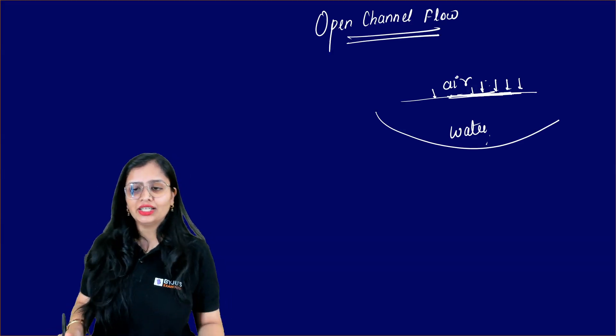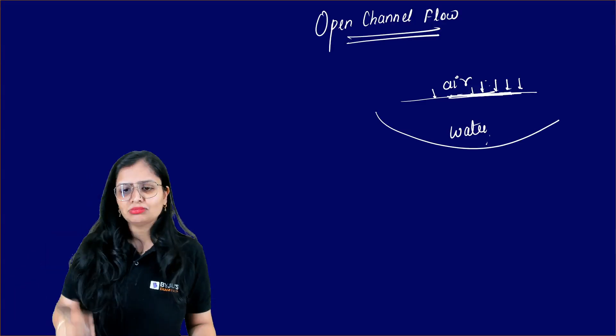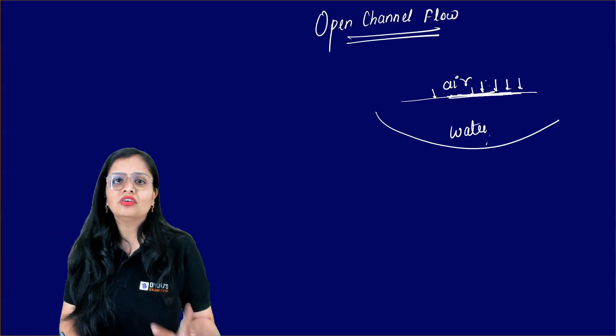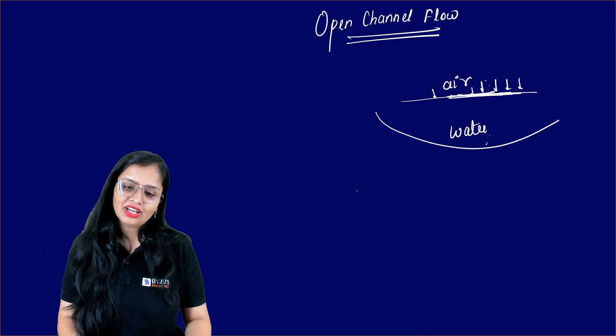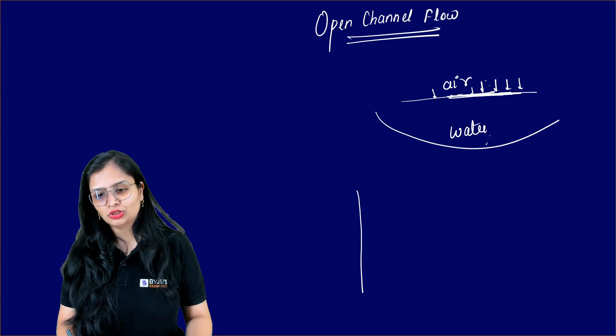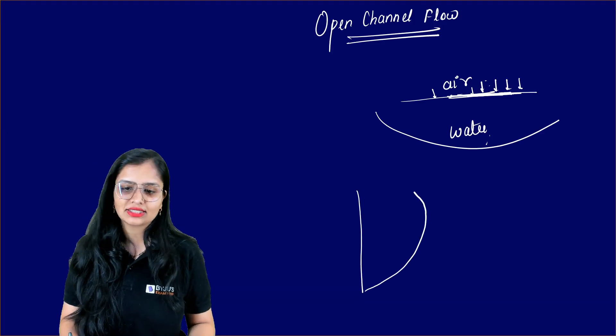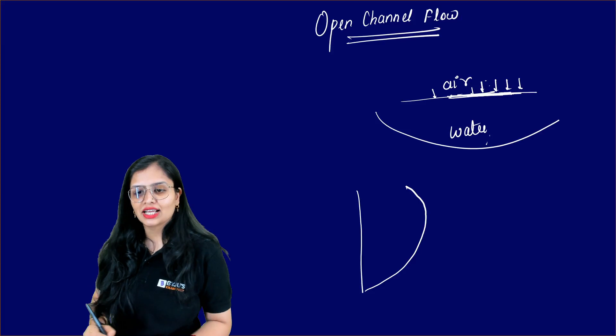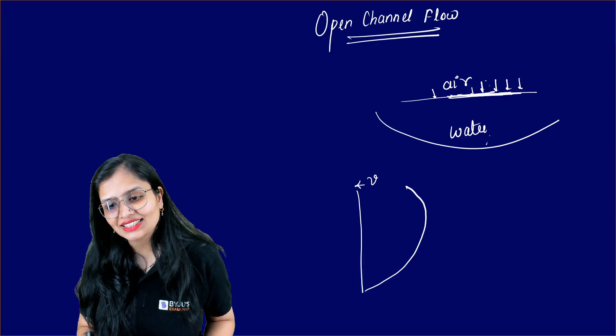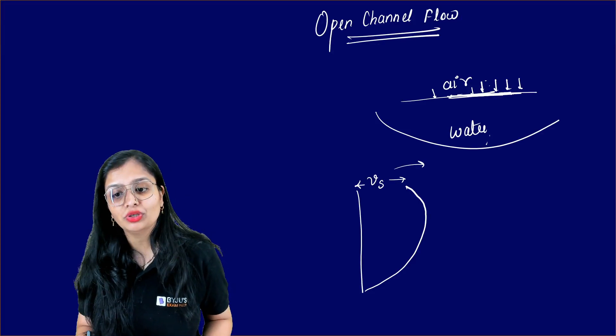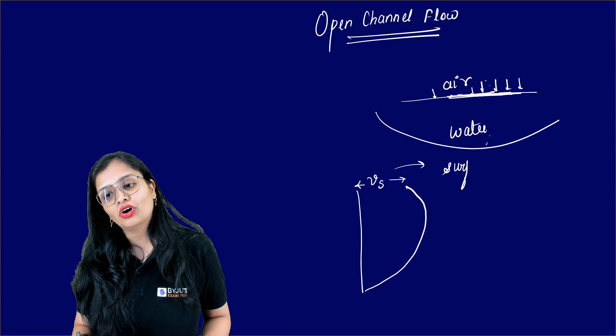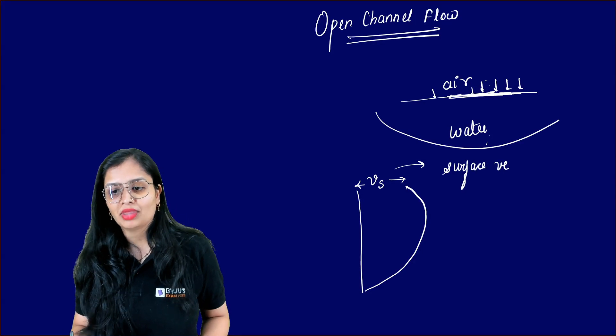Now comes the question: actually, technically speaking, the maximum velocity should occur at the free surface. Whenever you see the velocity distribution diagram, it is something like this, and you call this as Vs, the surface velocity. You never call it the maximum velocity; you call it the surface velocity.